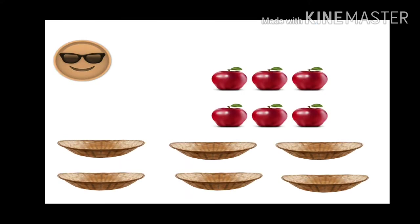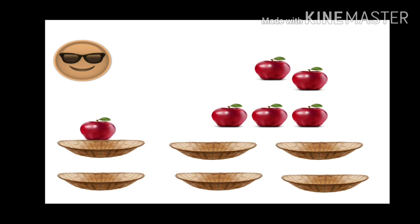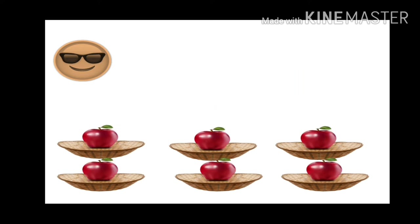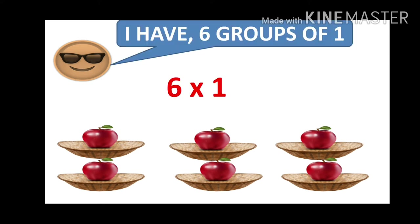Now it's the turn of roll number 6 — 6 baskets, 6 apples. So each basket has 1 apple. It's easily done! So he has 6 groups of 1. Each group has 1 apple, that means each basket has 1 apple. So 6 groups of 1 apple.